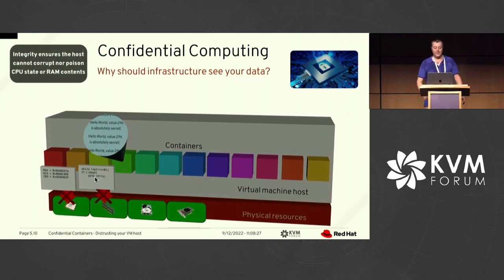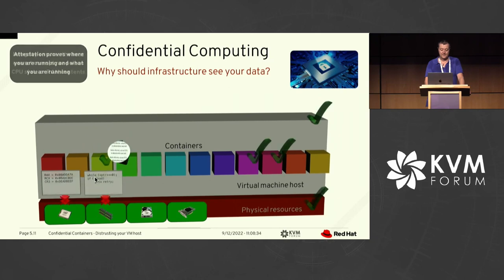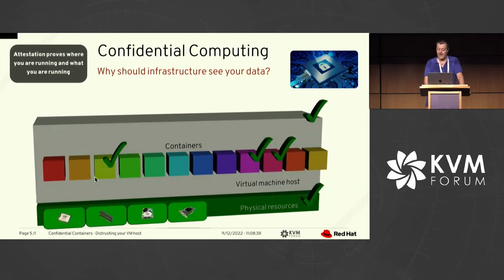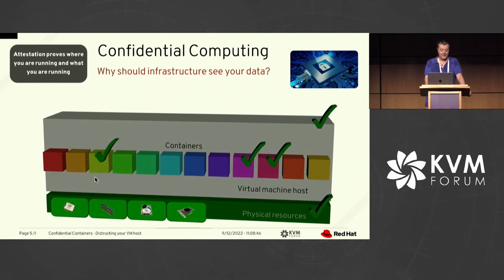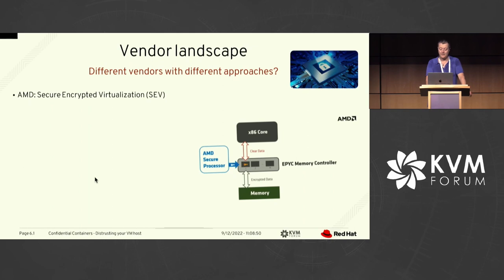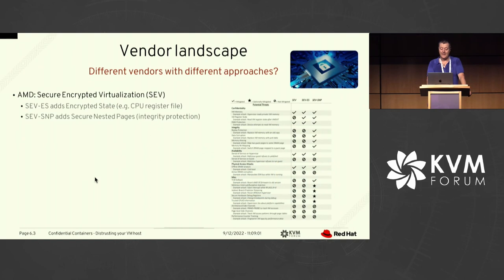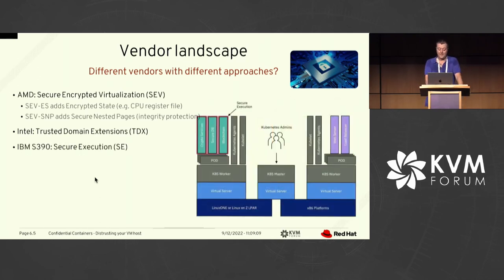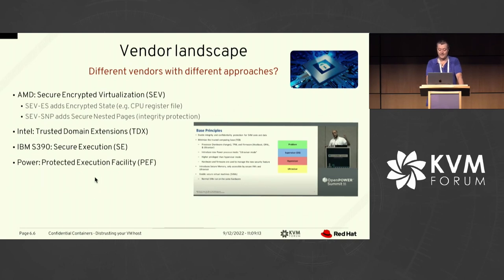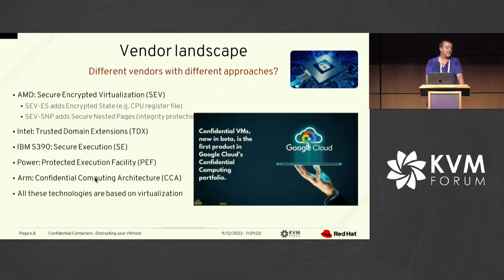There are other aspects to confidential computing, including integrity — ensuring the host cannot corrupt or poison the CPU state or RAM content — and protecting interrupts as well. Outside the kernel itself, there's attestation, designed to prove where and what you're running. The vendor landscape is rather complicated: AMD started with Secure Encrypted Virtualization (SEV), with variants SEV-ES that encrypts the CPU register file, and SNP that adds Secure Nested Pages for integrity protection. Intel has Trusted Domain Extensions (TDX). IBM S390 has Secure Execution. Power has a Protected Execution Facility. ARM has Confidential Compute Architecture. All these technologies are based on virtualization — that's why we need you guys.